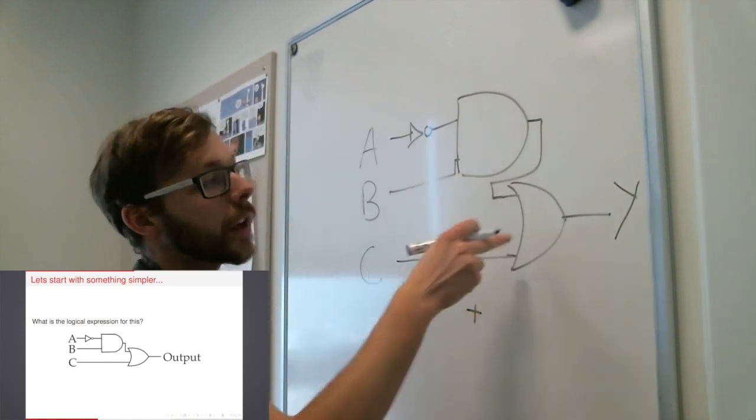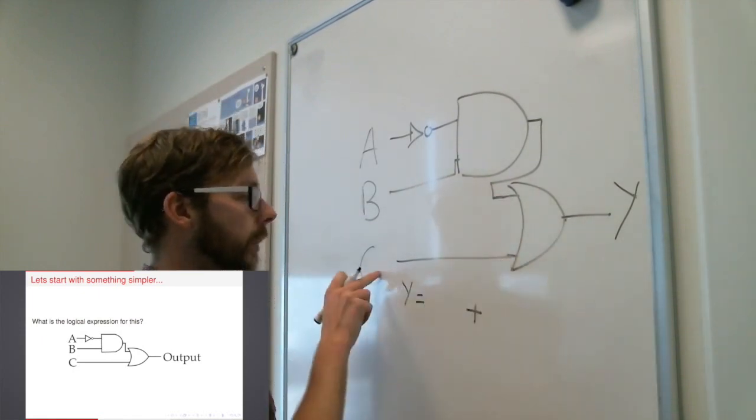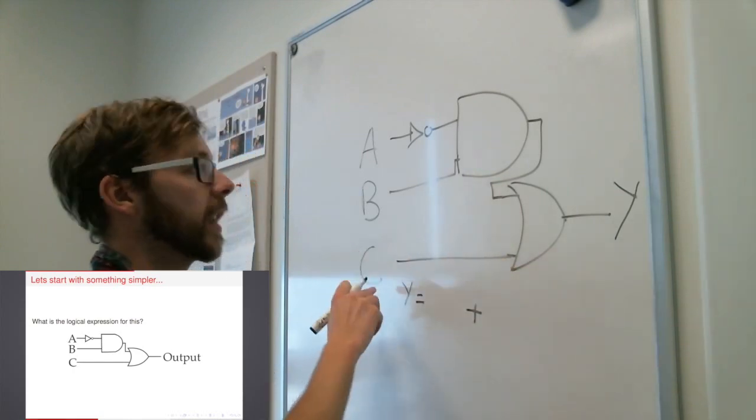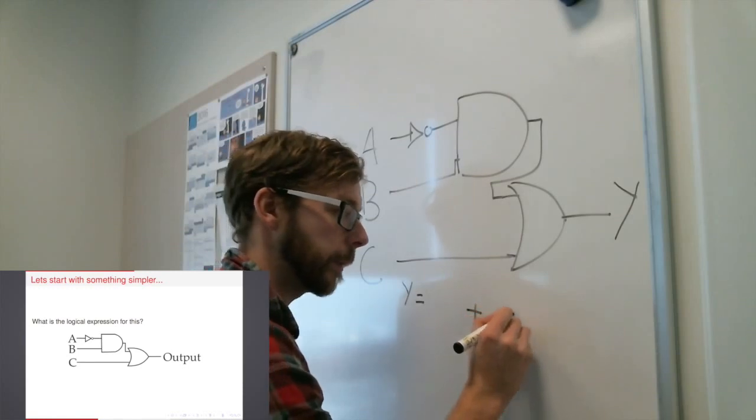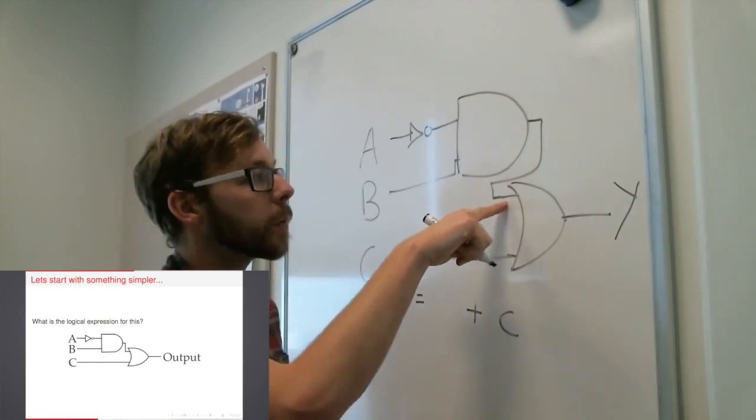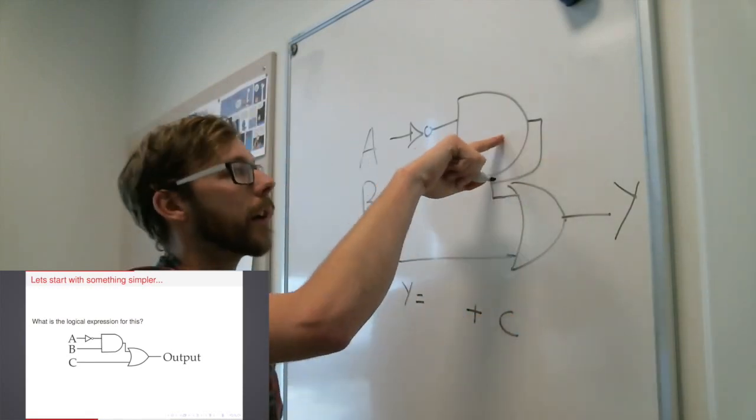So I know my final logical expression here is going to be an OR, and if you remember, I write my OR like this, and I just look at the inputs of that. So one of the inputs, this one down here, is just C, which means my final output is going to be something OR C.